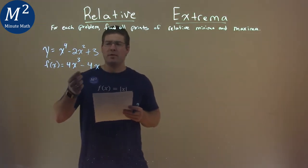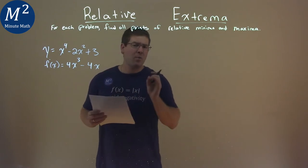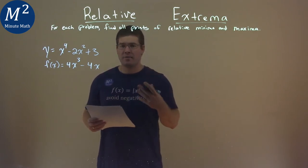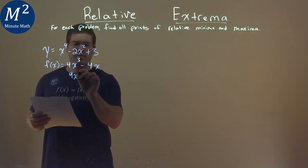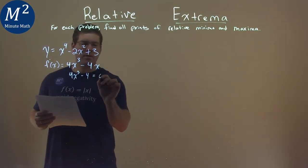So we have our derivative, 4x to the third minus 4x, and we need to set it to 0 and solve for x, find those critical points. So I take that 4x to the third power minus 4 and I set it equal to 0.